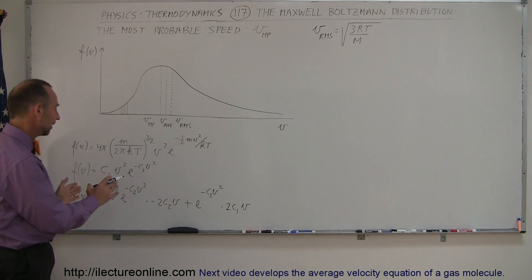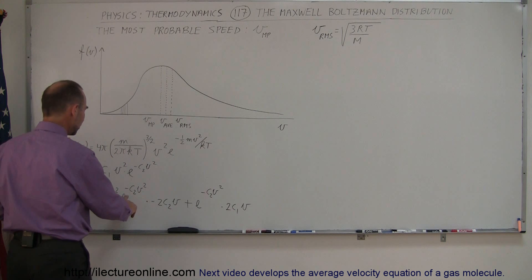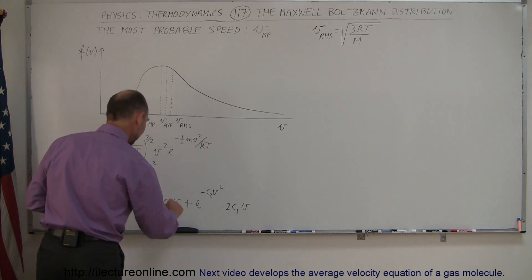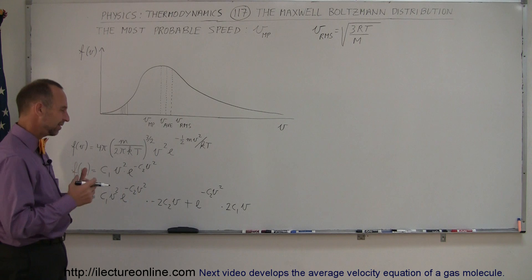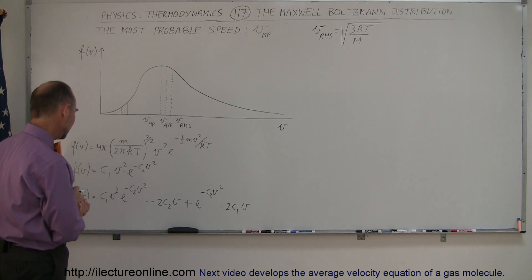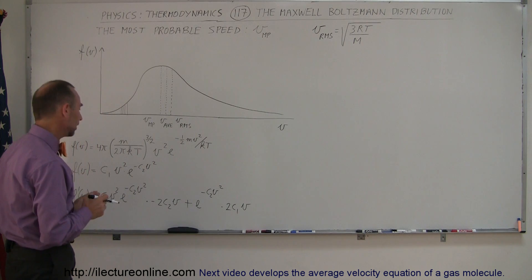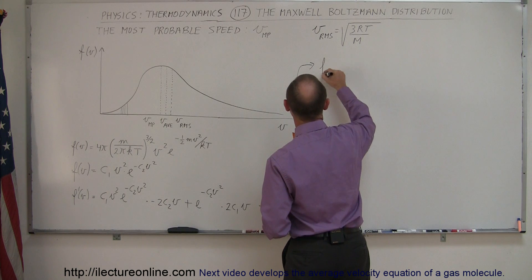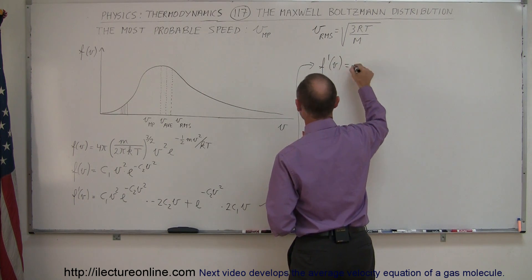And now what we have to do with this, is set this equal to 0 and solve for v. And that will be the v of the most, that would be the most probable velocity. Now, before we do that, we probably can simplify things a little bit by factoring out anything that's common. I see an e to the minus c2 v squared in both terms. I see a v squared here, and here I have a v times a v, which is a v squared. And actually, before I simplify it, maybe I should just multiply this out a little bit, so you can, actually this is part of this term right here. So let me multiply everything out, and then you can see how this equation simplifies a little bit.